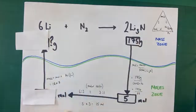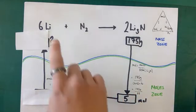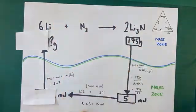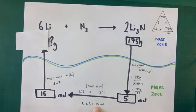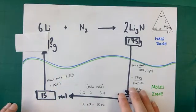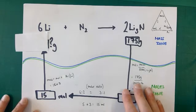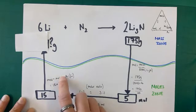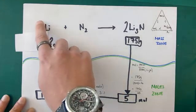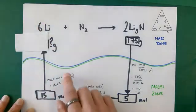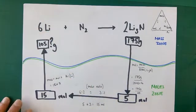How many moles of lithium was required to make 5 moles of lithium nitride? From the balanced equation it's a 6 to 2 ratio of lithium to lithium nitride, which simplifies to 3 to 1. So 5 times 3 gives 15 moles of lithium. Now going from moles back to mass: mass equals moles times relative atomic mass — 15 times 7 gives 105 grams of lithium.